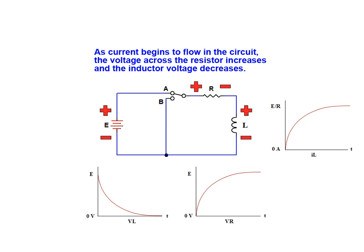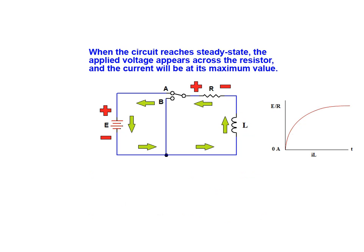As current begins to flow in the circuit, the voltage across the resistor increases and the inductor voltage decreases. When the circuit reaches steady state, the applied voltage appears across the resistor and the current will be at its maximum value.